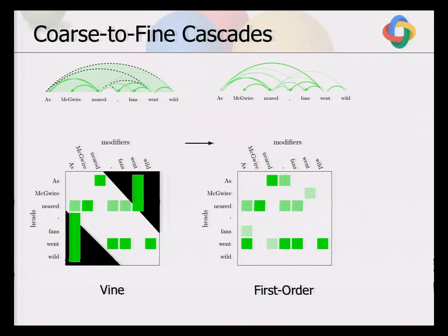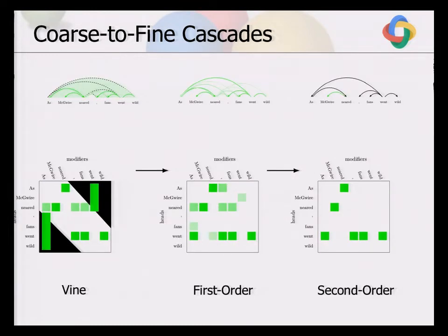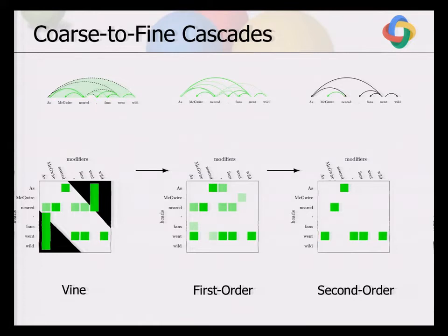We can then move to a first-order model that looks at each individual word within the outer arc region and computes scores, runs global inference on the remaining items, figures out the best structure, and either extracts the one-best parse or prunes again and moves to a second-order model — where additional low-scoring arcs under the first-order model have been removed. Because in each step we remove parts of the possible arcs, we can afford to apply a more complex model to the remaining arcs in the next step without paying the high price of running it exhaustively from scratch.